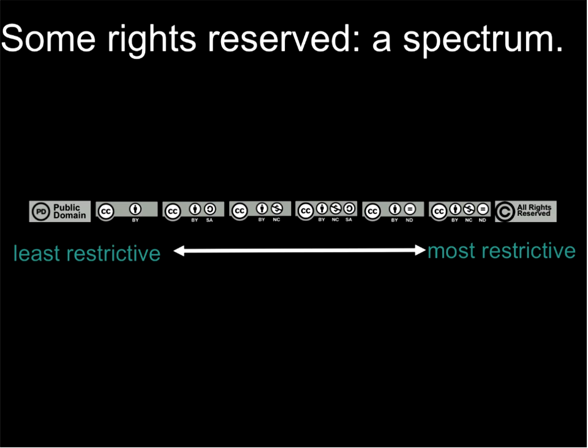It's easy to think about those licenses on a spectrum. On the far left is the public domain — no copyright, no protections, do whatever you want. On the far right is all rights reserved — you must ask for permission to do pretty much anything unless it's covered by fair use, which is also a gray area. In between there was nothing for the longest time — either no holds barred or ask permission every single time. Creative Commons stepped in and provided those six licenses to fill that gap. From least to most restrictive: Attribution only, Attribution Share Alike, Attribution NonCommercial, Attribution NonCommercial Share Alike, Attribution No Derivatives, and NonCommercial No Derivatives.